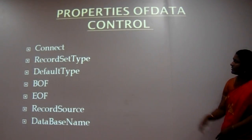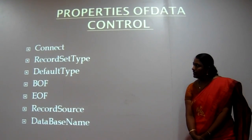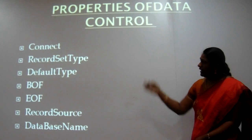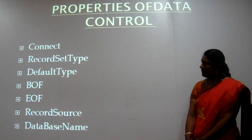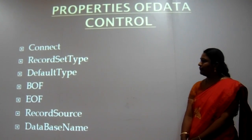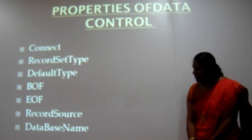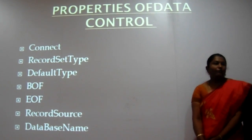Next, we are going to see some of the data control properties. These are: connect property, record set type, default type, BOF, EOF, record source, and database name.